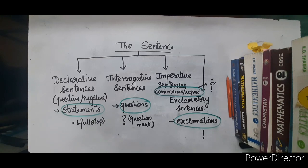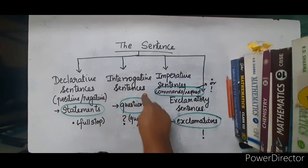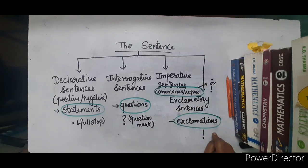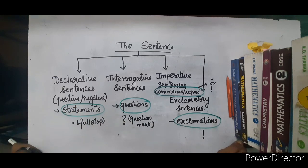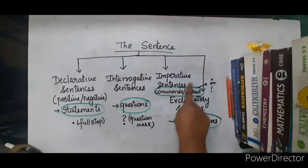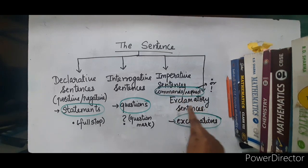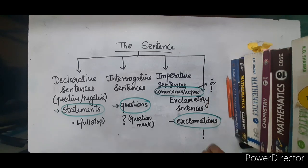I hope you all must have understood the types of sentences. Declarative sentences are either positive or negative — they are statements and usually end with a full stop. Interrogative sentences are mostly questions and end with a question mark. Imperative sentences are mostly commands or requests and end usually with a full stop or exclamation mark.